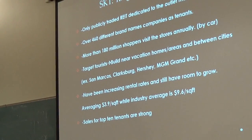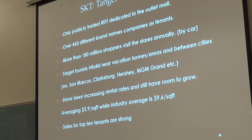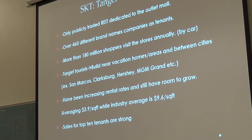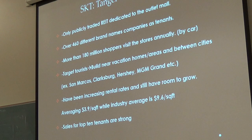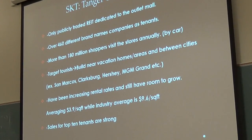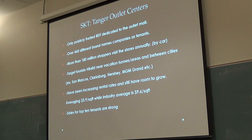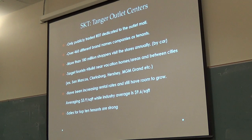Tanger Factory Outlet Centers is what sets them apart — they're the only publicly traded REIT that focuses mostly on the outlet space. They have 460 different brand name tenants, count 180 million shoppers per year, and are strategically located to target tourists. They place themselves between cities — like San Marcos, which is between San Antonio and Austin — and also between Baltimore and Washington D.C., among other examples.